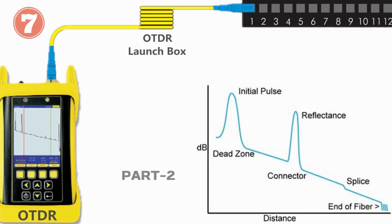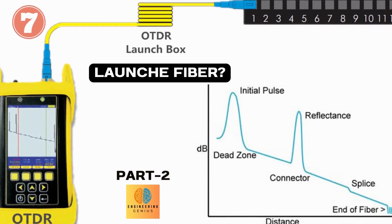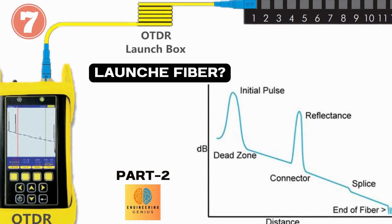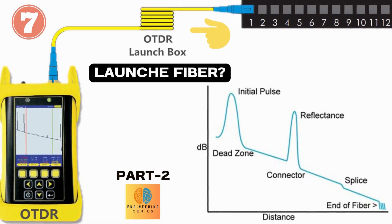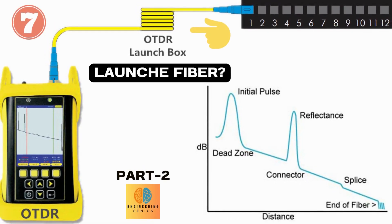Question 7 can be: what is launch fiber and its purpose in OTDR testing? The launch cable, sometimes called a pulse suppressor or dummy fiber, allows the OTDR to recover after the test pulse is sent into the fiber. Launch fiber is used to create the proper conditions for testing another similar optical fiber for faults, and this method avoids undesirable variations in loss and distance measurements.